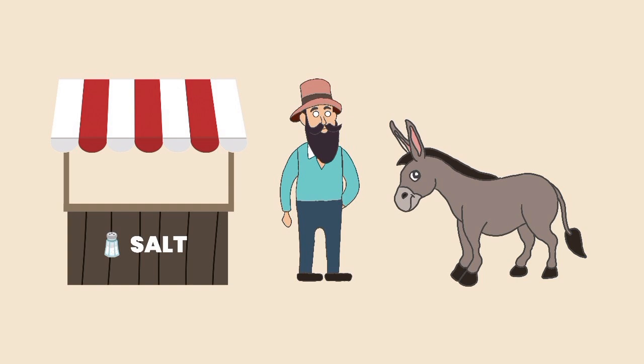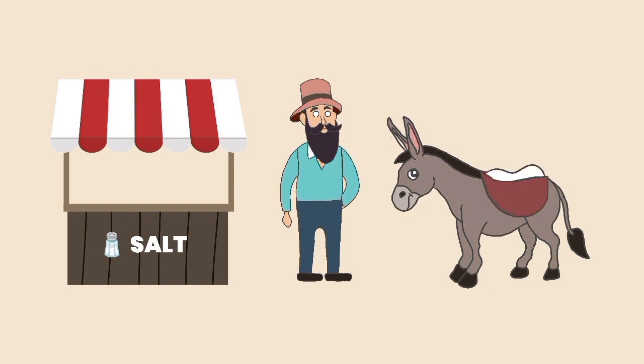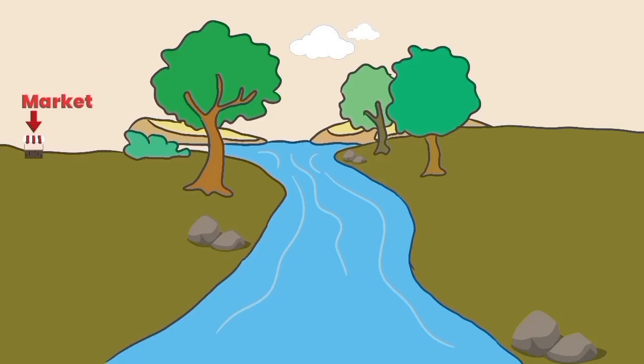Every morning, the merchant would load his donkey with bags of salt to go to the market in order to sell the salt. On their way to the market, the merchant and his donkey always had to cross a river.